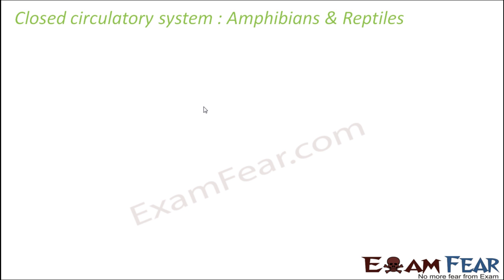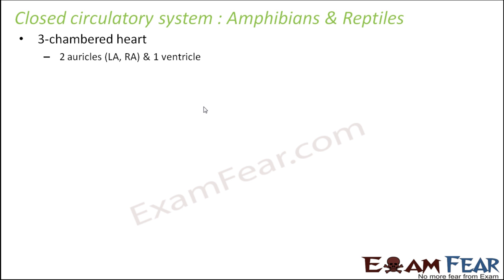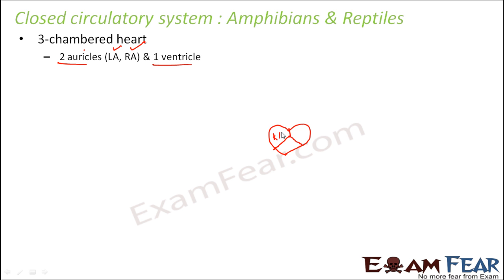Now let us look at the circulatory system of amphibians and reptiles. They have a three-chambered heart — instead of one auricle and one ventricle, they have two auricles and one ventricle: a left auricle and a right auricle, depending on which side the auricle is located. The two auricles are the receiving chambers and the single ventricle is the pumping chamber.